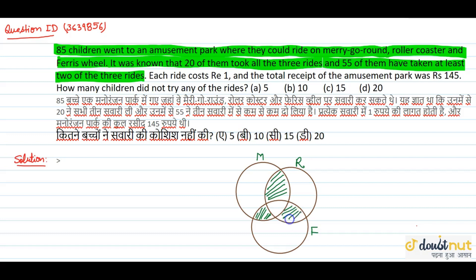This is the children who have M and F. This is the children who have R and F. This is the children who have all 3 types of riding: M, R, and F.